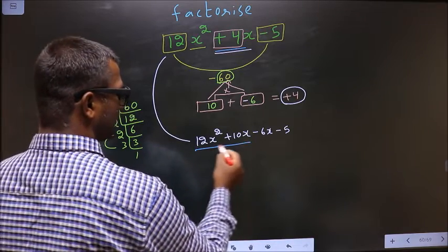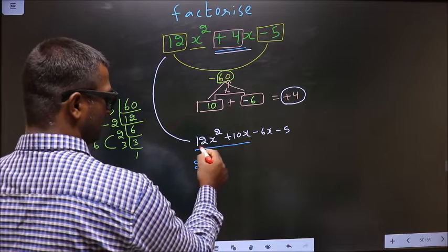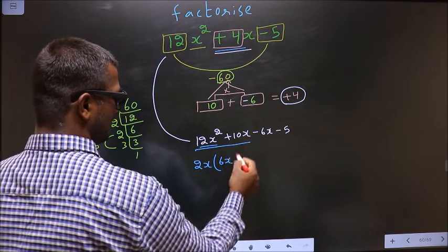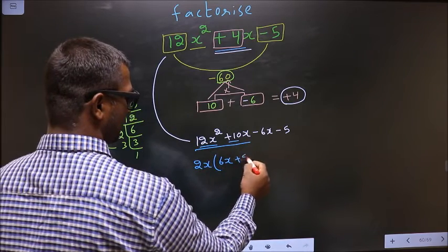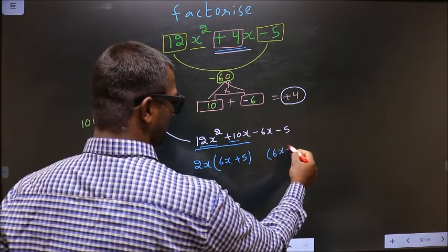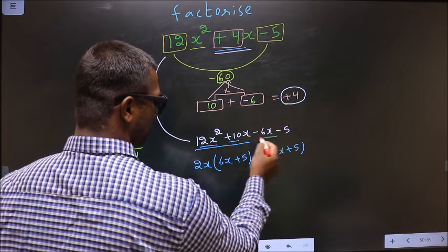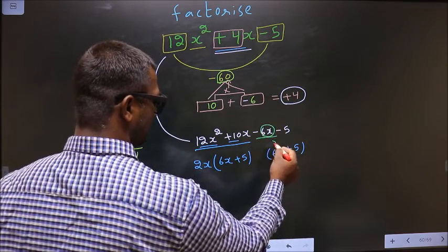What can be taken common from these 2 terms is 2x. So here you get 6x. Here you get +5. Whatever you have got here, here also you should get the same thing. Now from this 6x has gone inside. So outside you are left with -1.